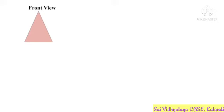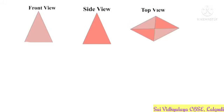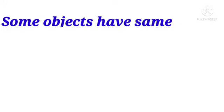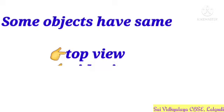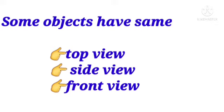Children, look at the front view of this object — it is a triangle. This is the side view of the same object — that is also a triangle. Next, this is a top view. What can this be? We will learn about those objects that have the same top view, side view, and front view.